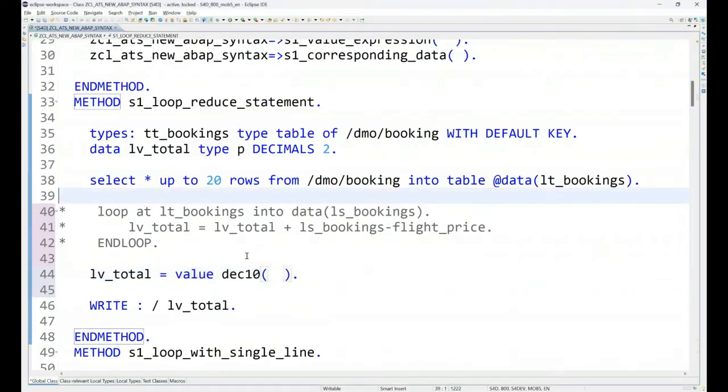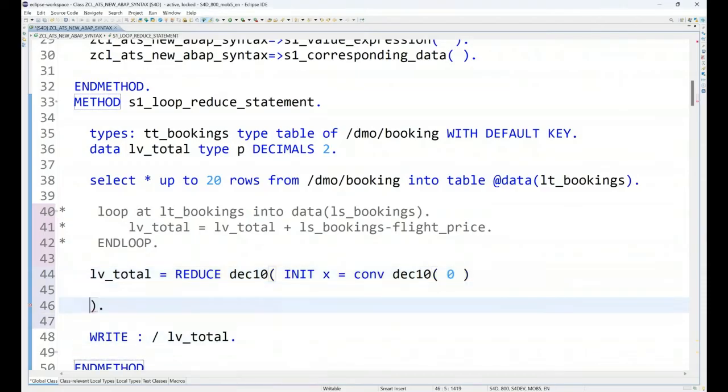So this should be reduce, not value expression, and we will say reduce decimal of 10, initialize a value of x equal to 0. Now when you initialize x as 0, it will be initialized by default as an integer. So we have to use conversion function also to tell the computer to treat it not as an integer but as a decimal. So this way computer will always treat our value of x as a decimal point, and I can say x equal to x plus my booking fees.